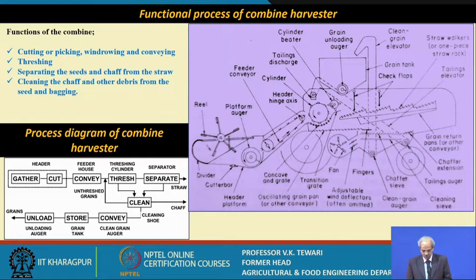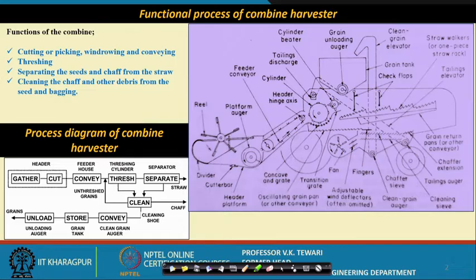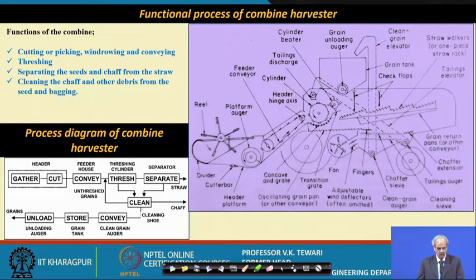The cut material is conveyed onto the threshing drum where it is threshed. The full list of functions of the combine includes cutting, picking, windrowing, conveying, threshing, separating the seeds and chaff from the straw, cleaning the chaff and other debris from the seed, and bagging.